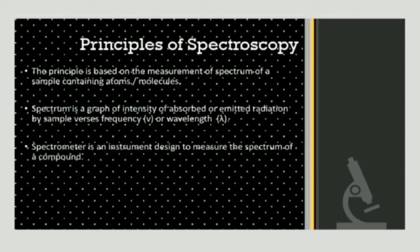The principle of spectroscopy is based on the measurement of the spectrum of a sample containing atoms and molecules. Spectrum is a graph of intensity of absorbed or emitted radiation by a sample versus frequency or wavelength. A spectrometer is an instrument designed to measure the spectra of a compound, measuring the light across the electromagnetic spectrum.